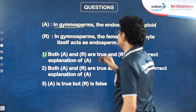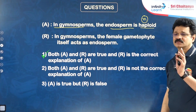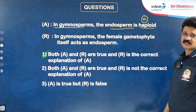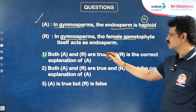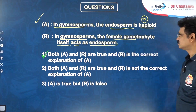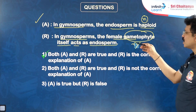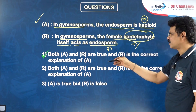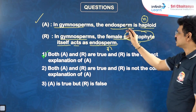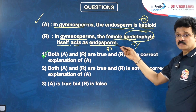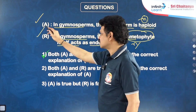Reason: In gymnosperms, the female gametophyte itself acts as endosperm, and the ploidy of gametophyte is haploid. The endosperm in gymnosperms is a pre-fertilization product, haploid, formed before fertilization — not a result of double fertilization. That is why endosperm is haploid in gymnosperms. Reason is also correct and is the correct explanation — first option. Note: triple fusion is absent in gymnosperms, which is why endosperm is never triploid in gymnosperms.